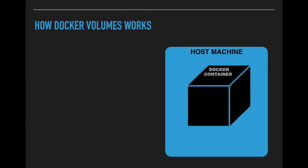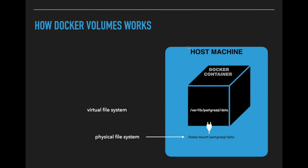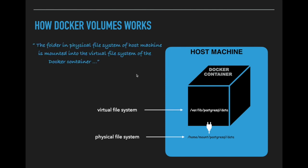We know that there will be a physical file system on the host machine, and we plug the physical file system path into the virtual file system path of the Docker container. The folder in the physical file system of the host machine is mounted into the virtual file system of the Docker container. Whatever data is written by the Docker container into the virtual file system folder is replicated into the physical file system folder, and vice versa. So even if the container restarts, it still gets the data from the physical file system folder.